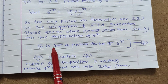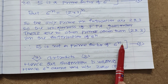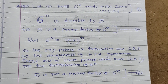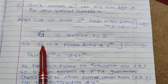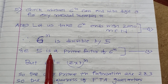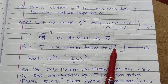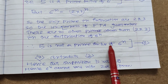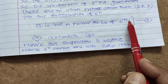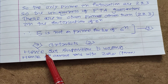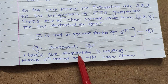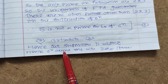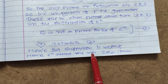Therefore, 5 is not a prime factor of 6 to the power of n. But in point number 2 we have that 5 is a prime factor of 6 to the power of n, while in point number 3, 5 is not a prime factor of 6 to the power of n. So we can write: point 3 contradicts point 2. Hence our supposition is wrong. Therefore, 6 to the power of n cannot end with 0.